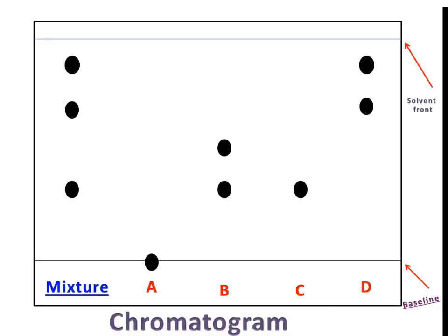We call this chart a chromatogram — it shows the separated spots on the filter paper. Comparing spots B and C: C splits into only one spot, meaning it contains one substance — dye C is pure. Spot B splits into two, so B is not pure. D is also not pure. We have three dyes with different locations on the chromatogram; the most soluble one travels furthest — the highest spot is the most soluble.